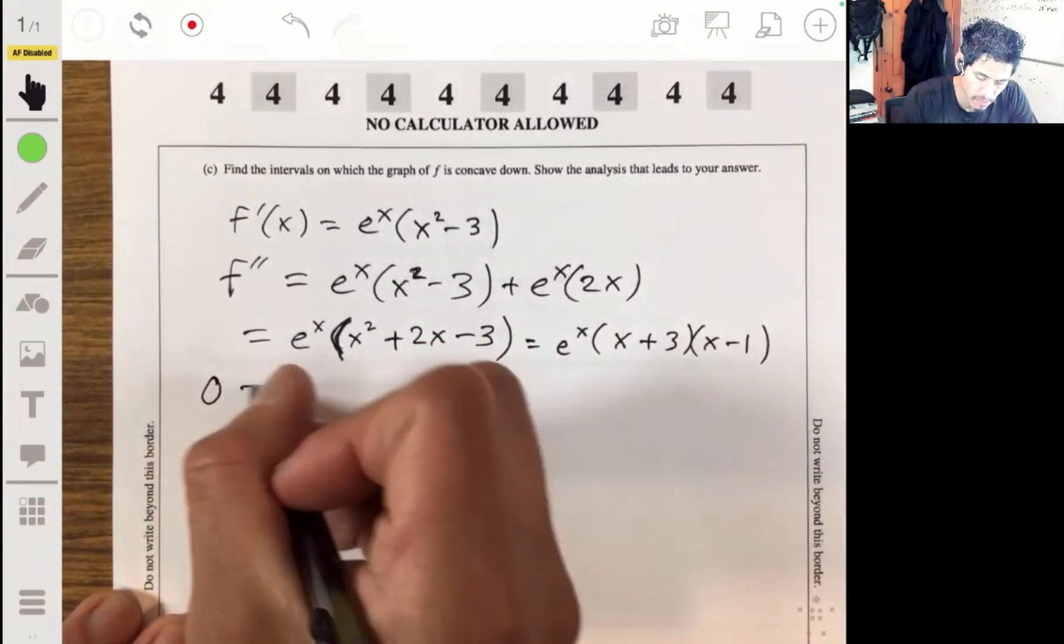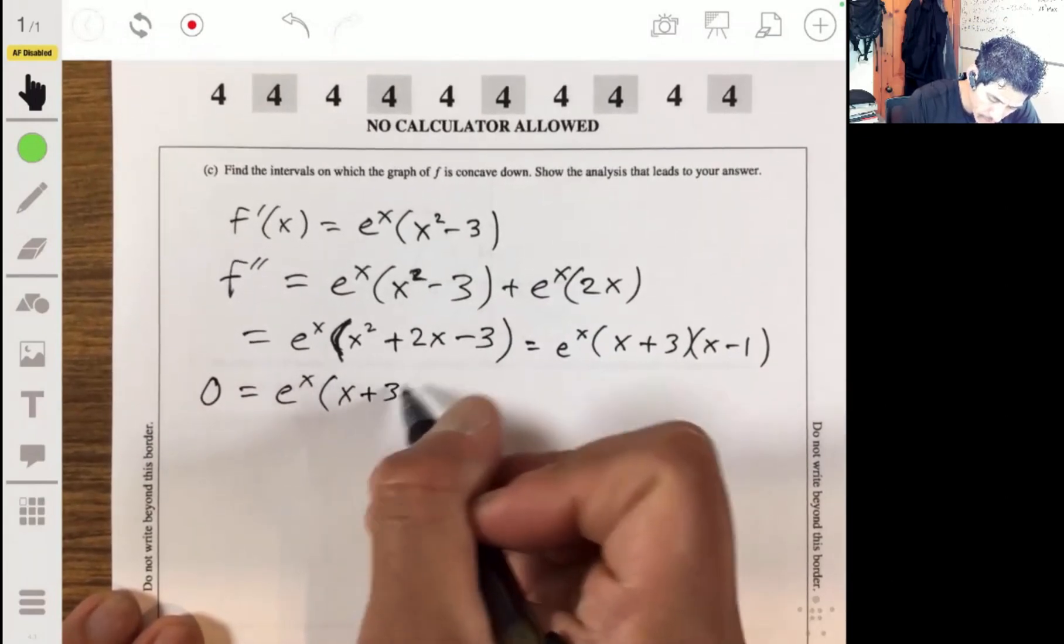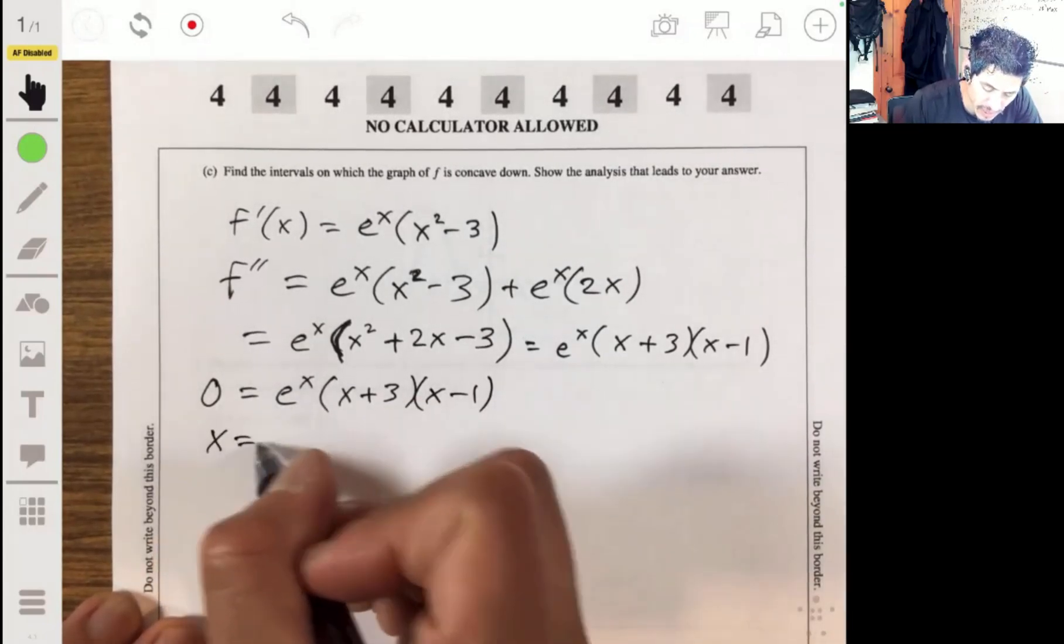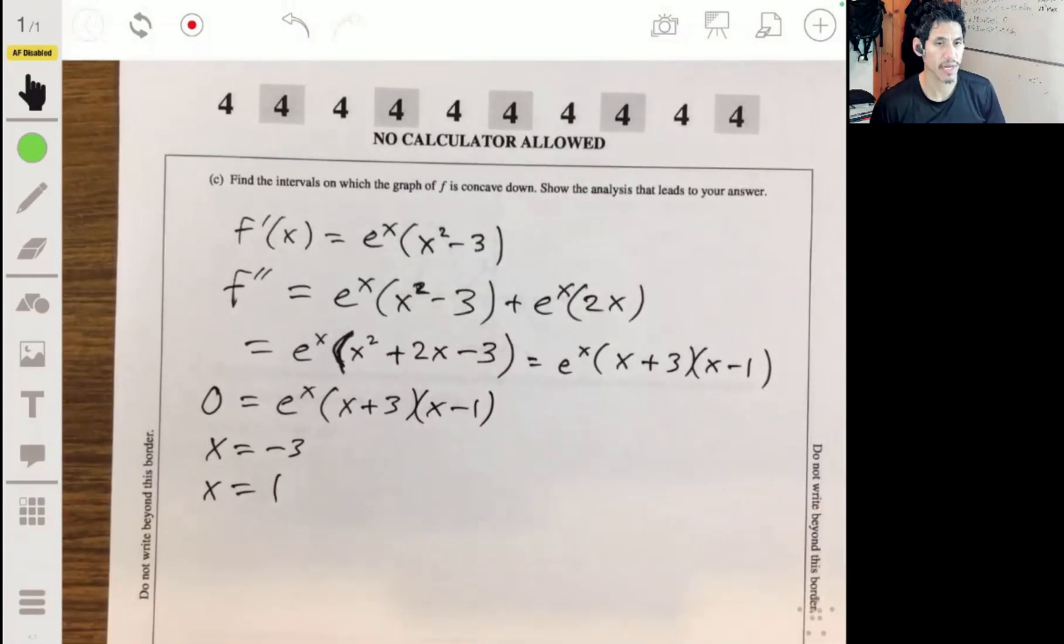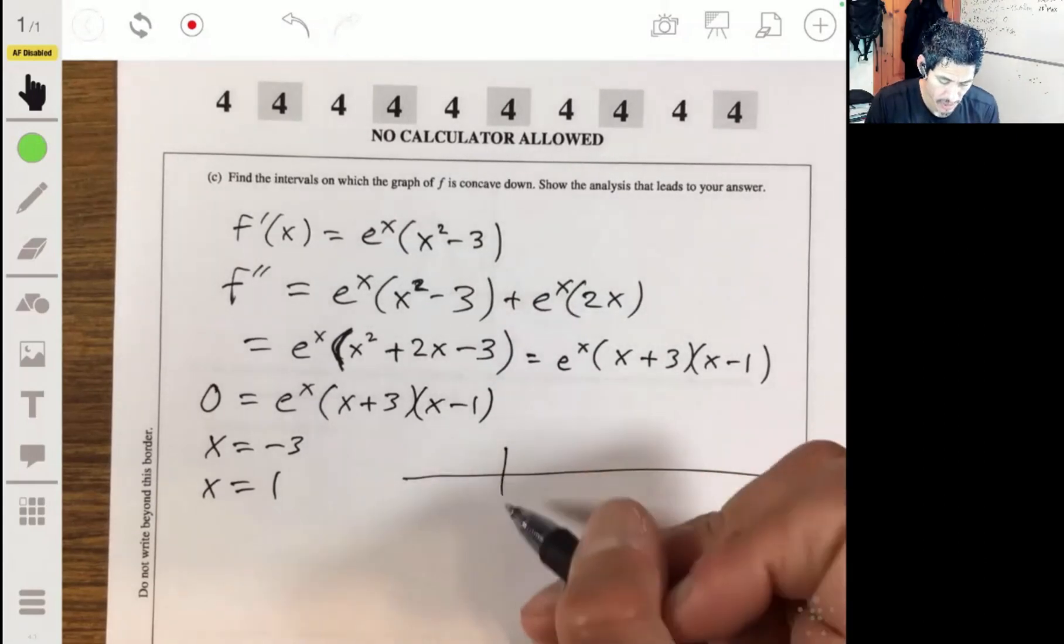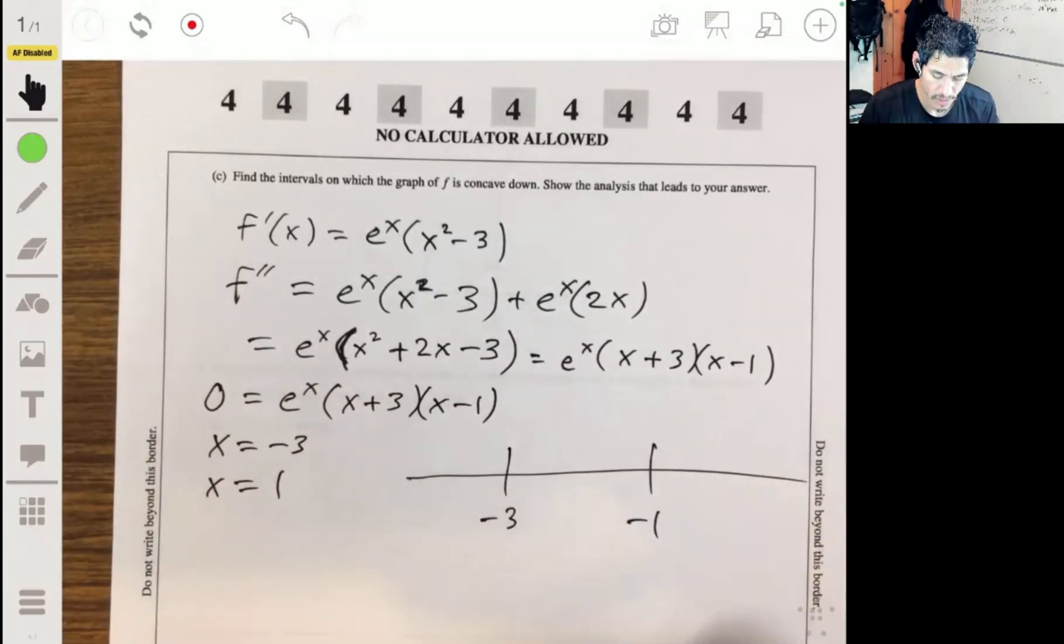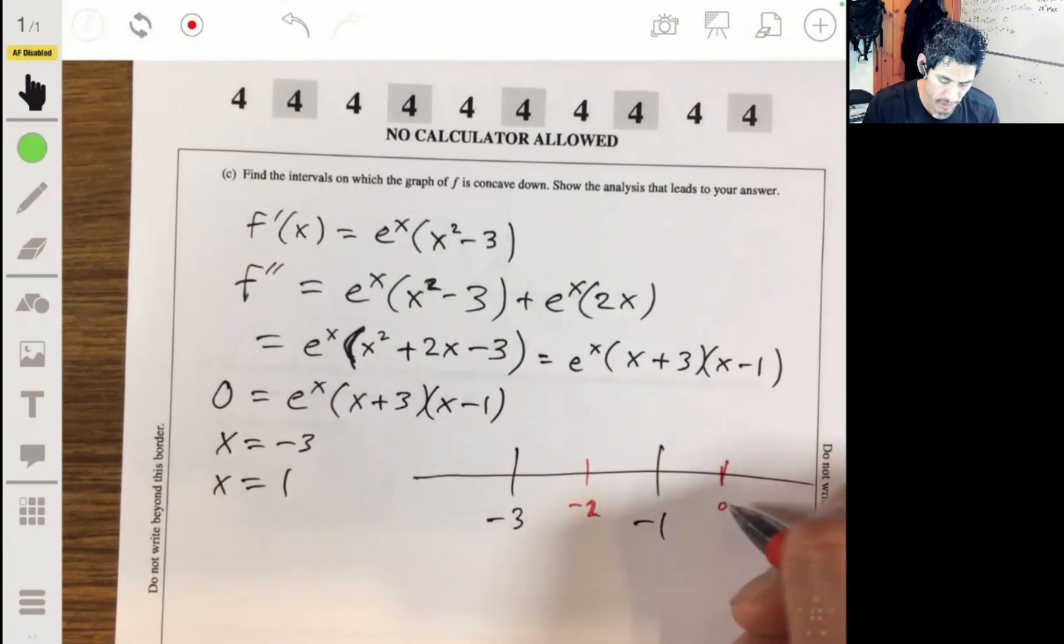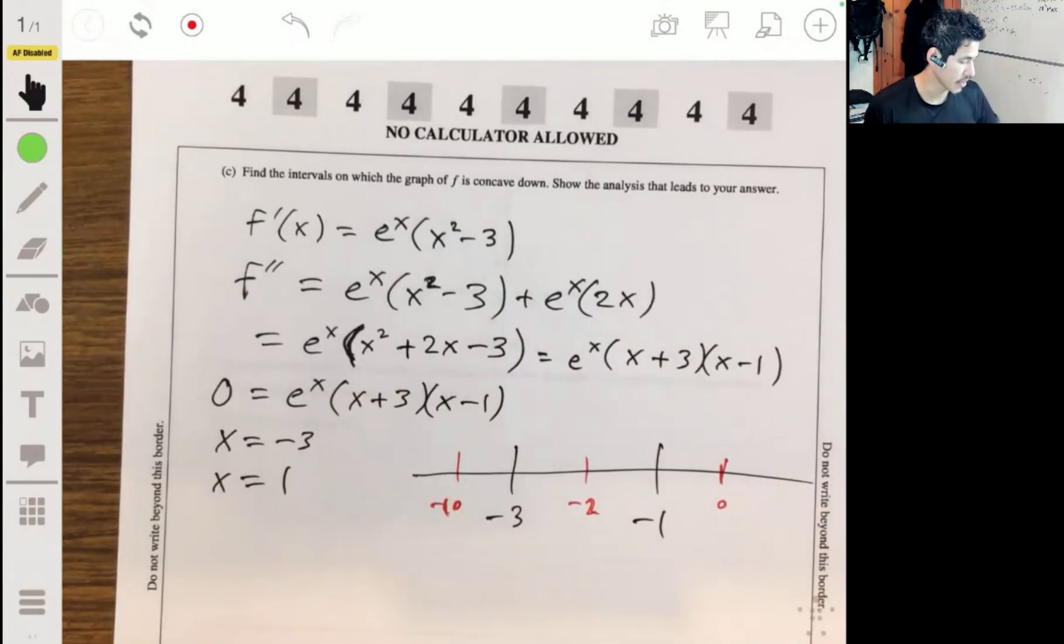Set this equal to 0. We got two points, two values we want to check, negative 3 and positive 1. So we just check to see what's going on on the intervals broken up at those points. So we got negative 3, positive 1, check the points between them. So maybe let's look like negative 2, 0, negative 10.